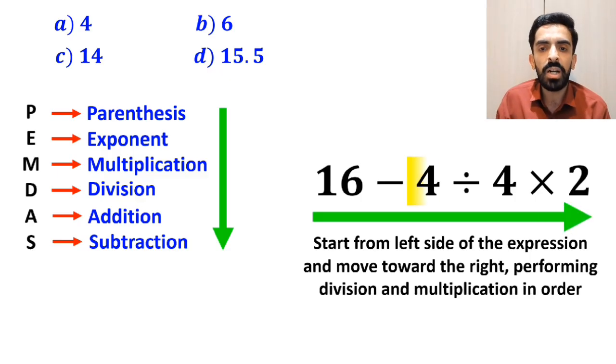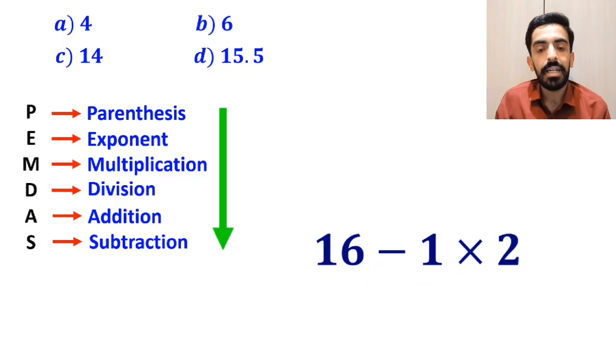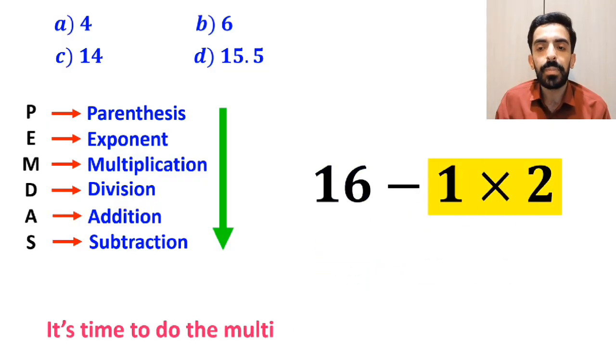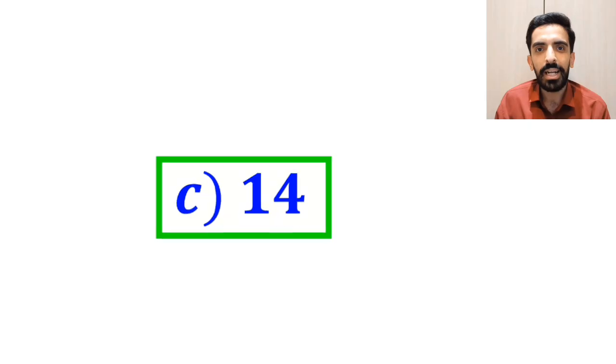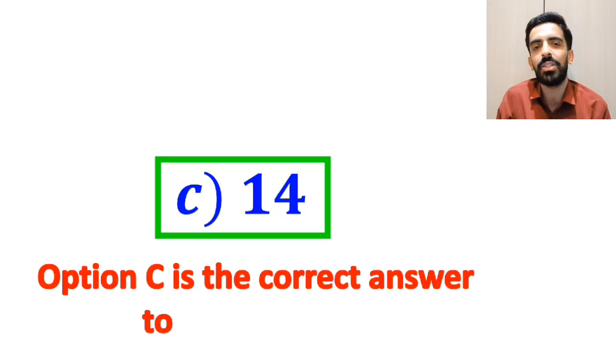So, first we perform the division between the two fours, and this expression simplifies to 16 minus 1 times 2. Now, it's time to do the multiplication between 1 and 2, which gives us 16 minus 2. And finally, the value of this expression is equal to 14. Therefore, option C is the correct answer to this question.